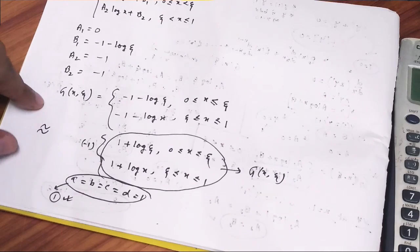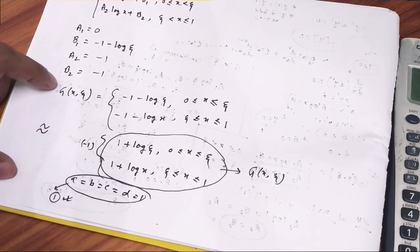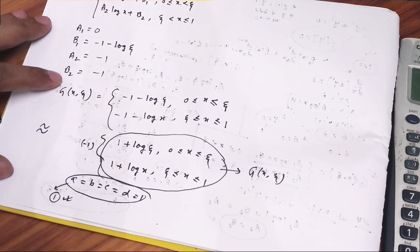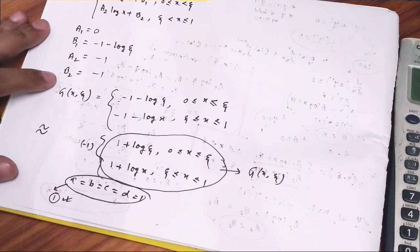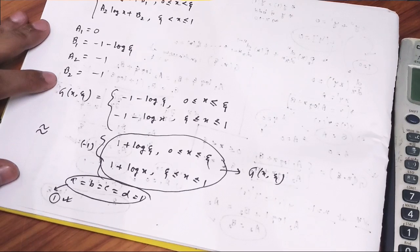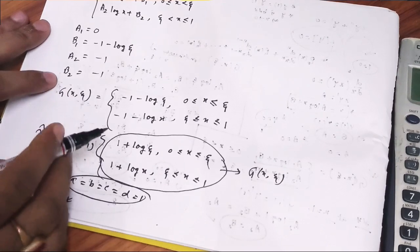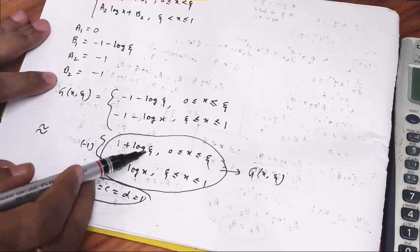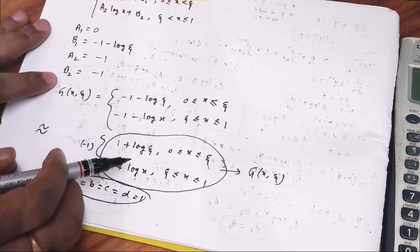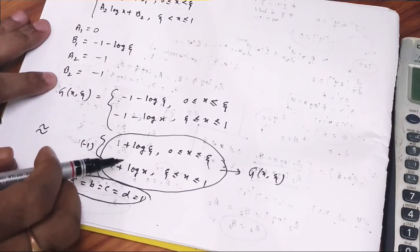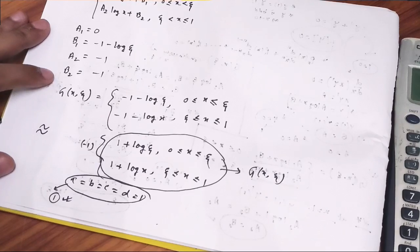Moreover, observe carefully that from our properties and results we have discussed that G(x, epsilon) — the Green's function — is symmetric about its two parameters x and epsilon (or xi, or t, whatever notation you use). It is symmetric about x and xi, and here you can verify this by simply replacing x by xi: it will have no effect on the expression.